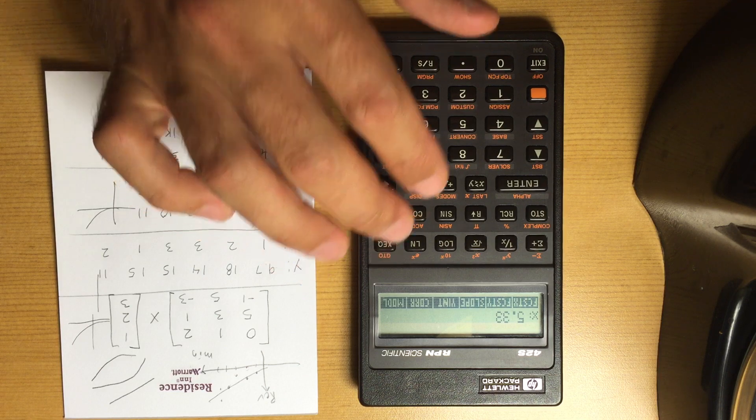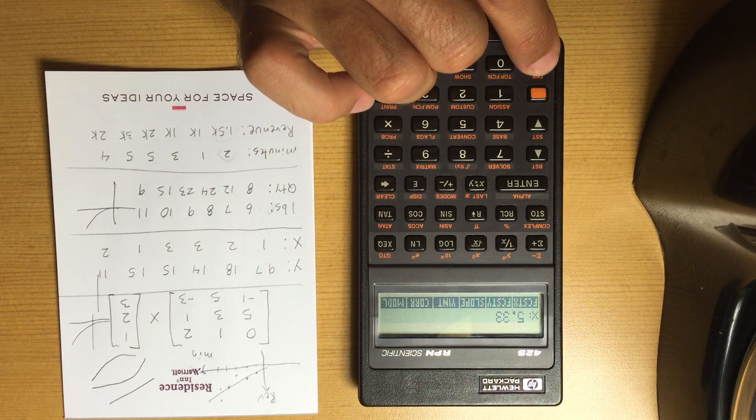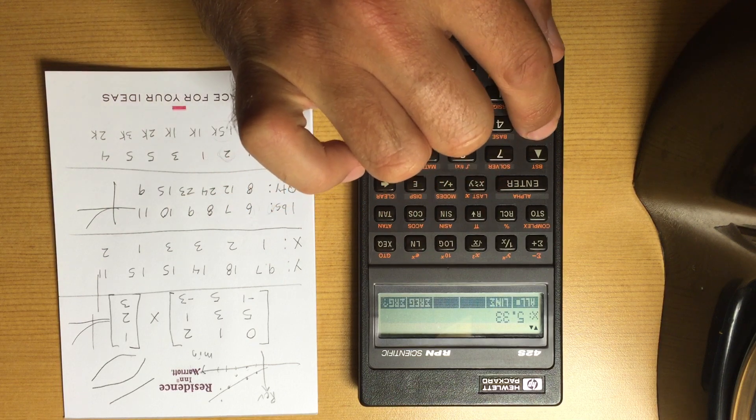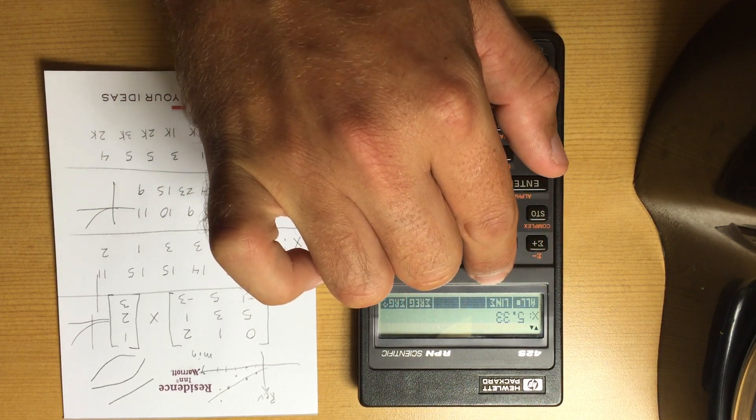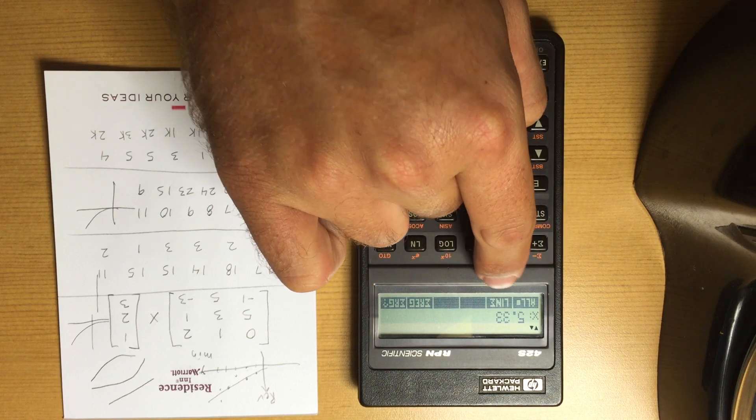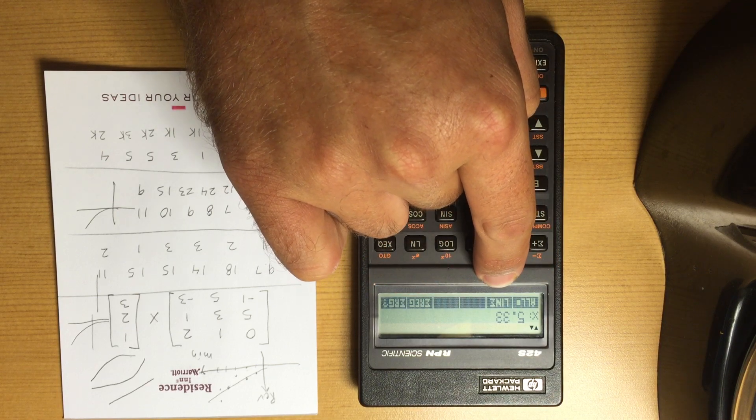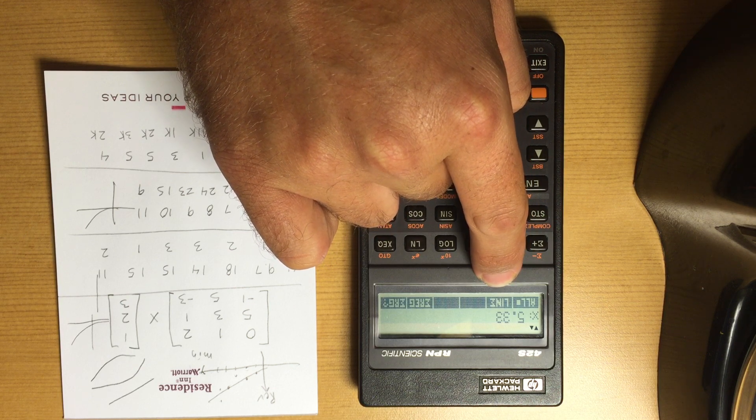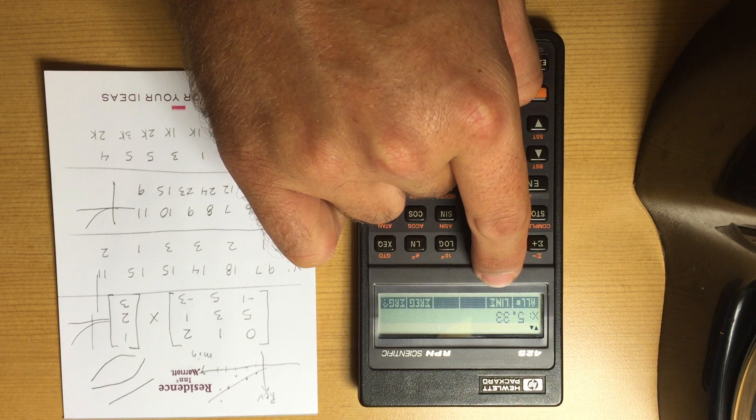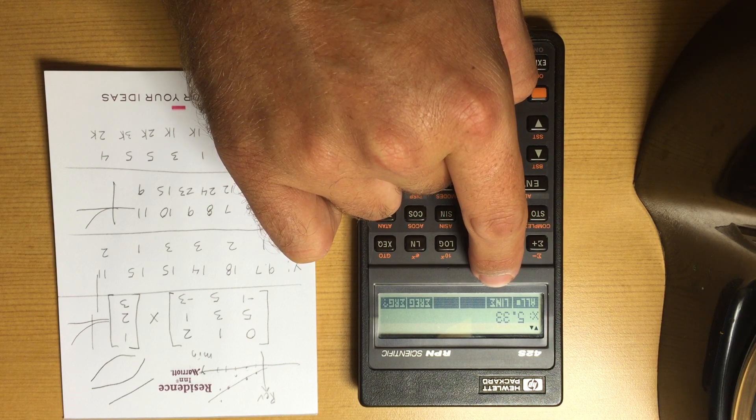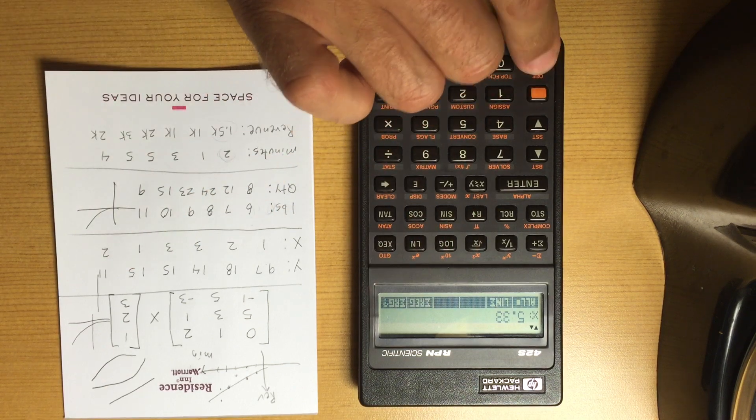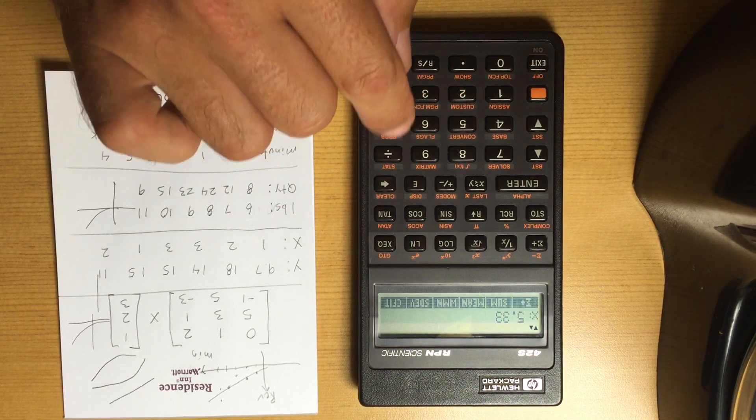So anyway, really nice curve fit. One thing I should note: these are the summation registers. You can use 'all' or 'linear.' If you use linear, you save on memory space because it uses fewer registers—only like five or six versus eleven. But you only get the linear fit. If you use 'all,' then you have the power fit, the exponential, the logarithmic. That's just one thing to keep in mind.